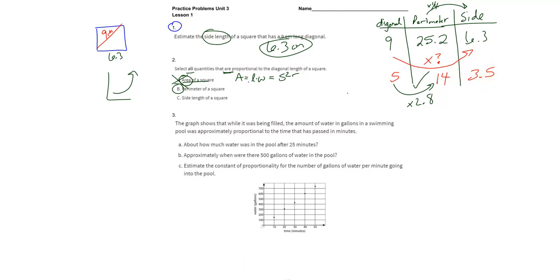Now, to check for proportionality, all we have to do is divide the pairs of diagonals and sides that we have, which are these right here, and if it's the same number to multiply to get over, then we know that it's a proportional relationship.